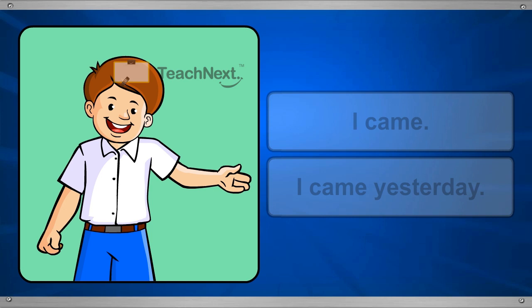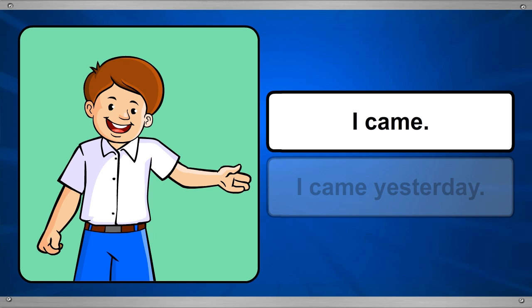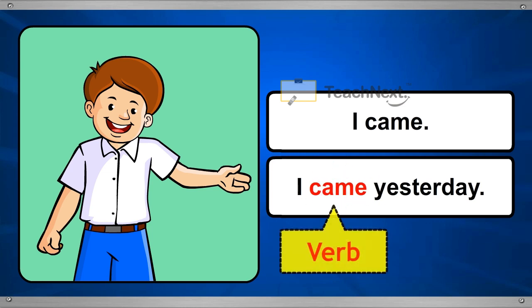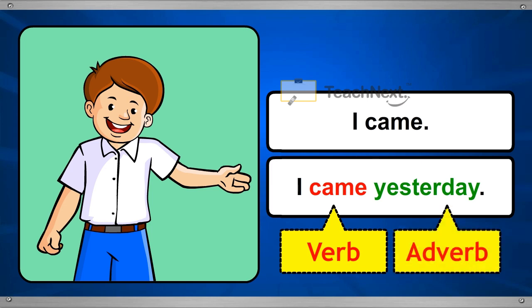Let us observe these sentences one by one. I came. I came yesterday. Here the word came is a verb. The word yesterday has added more meaning to the verb came. So, yesterday is an adverb.